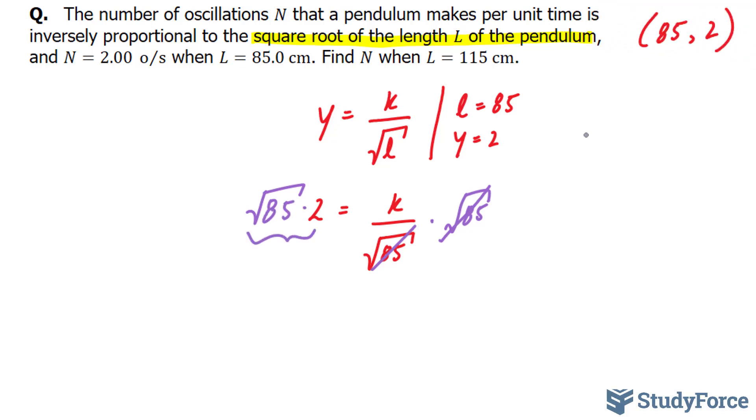So our equation becomes y is equal to 2 times the square root of 85. That represents our k over the square root of l.